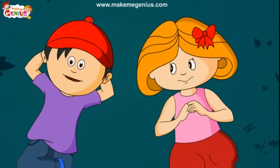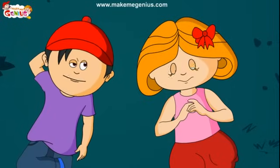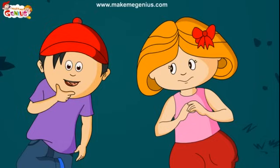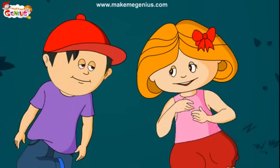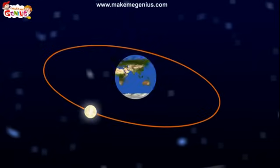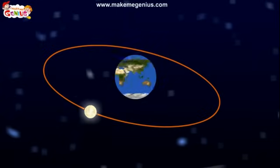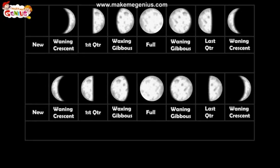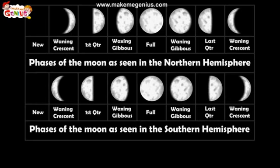I never understand why the moon plays hide and seek with us. I could not find the moon in the sky a few nights back. Do you know why that happens? The moon keeps on changing its shape because of its revolution around the earth. The different shapes of the moon are called the phases of the moon.